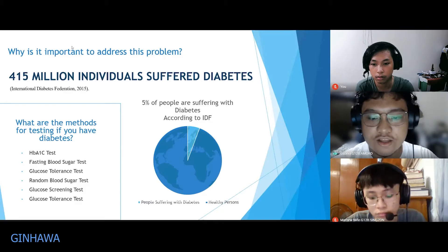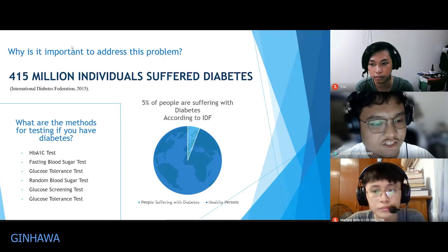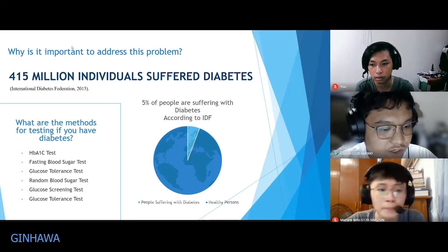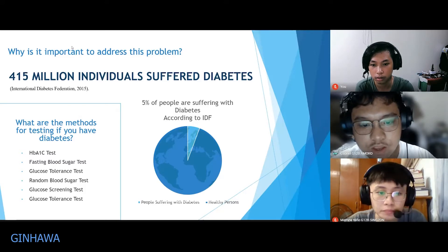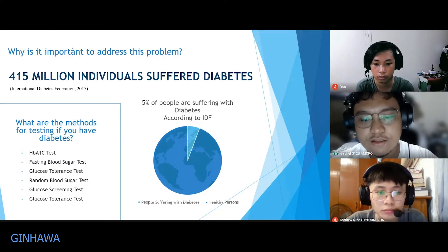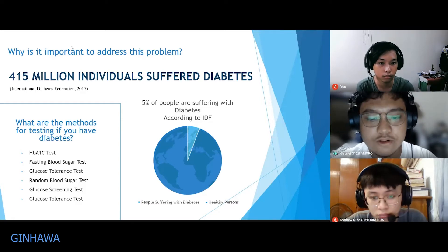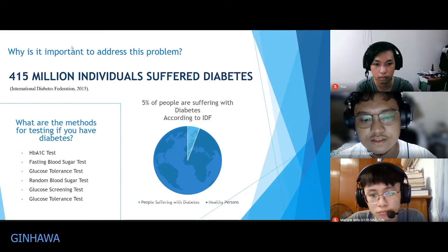The current available methods for diagnosing diabetes include the HbA1c test, fasting blood sugar test, glucose tolerance test, random blood sugar test, and others. What these methods have in common is that all of them are invasive — they use needles to puncture your skin to obtain blood, which is then used to analyze the amount of blood glucose present in the human body.